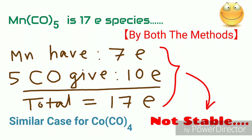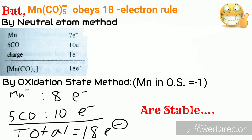But their anions are stable: that is, Mn(CO)₅⁻ and cobalt tetracarbonyl minus, due to the extra one electron on the metal. It follows the 18 electron rule.